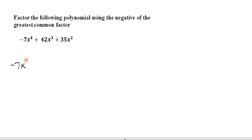So negative 7x squared is what we're going to be factoring out. The GCF is 7x squared, but we're taking out the negative of it. Remember the answer is going to be the GCF times something.